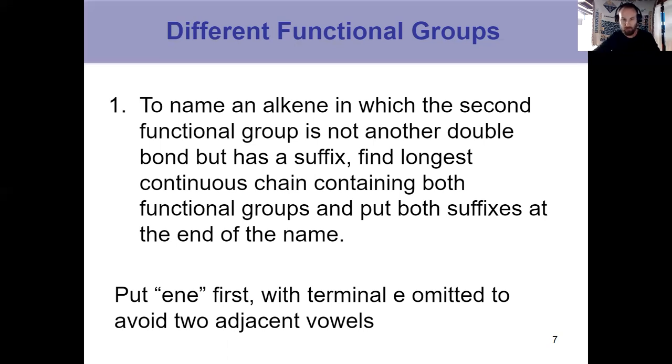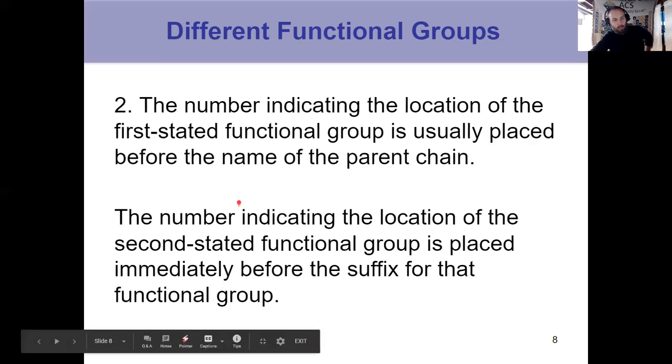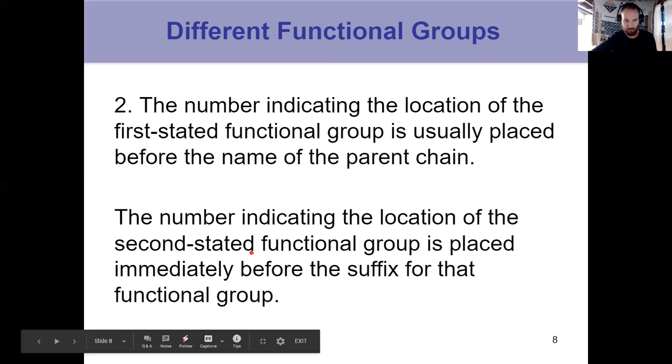So because we are typically putting the alkene first, the number that's coming before the name of the parent chain is typically going to correspond to the location of the alkene, because the number indicating the location of the first stated functional group goes before the name of the parent chain. The location of the second functional group goes just before the suffix.